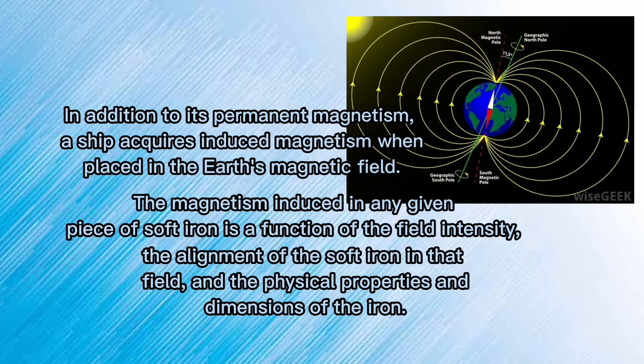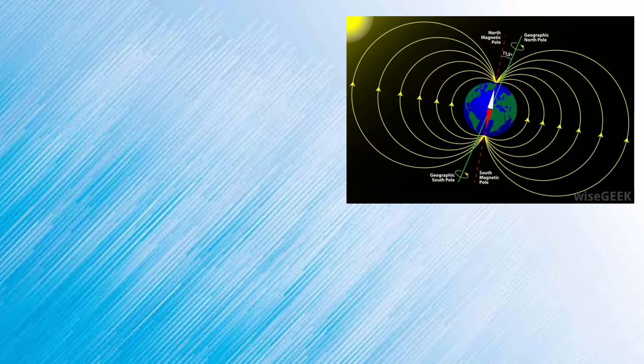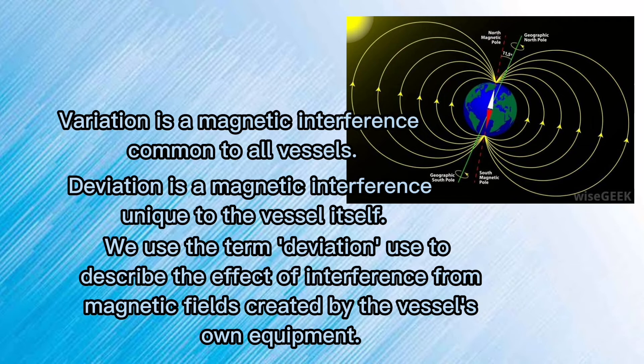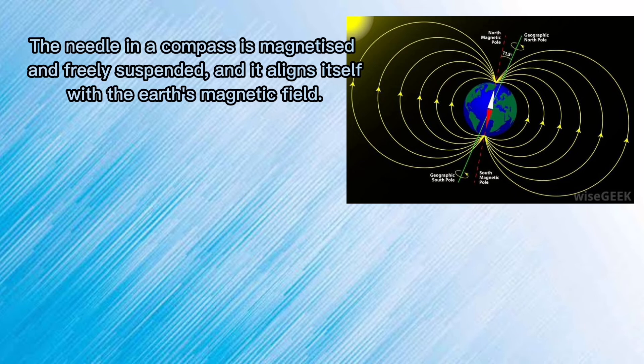Variation is a magnetic interference common to all vessels. Deviation is a magnetic interference unique to the vessel itself. We use the term deviation to describe the effect of interference from a magnetic field created by the vessel on equipment. The needle in a compass is magnetized and freely suspended, and it aligns itself with the Earth's magnetic field.